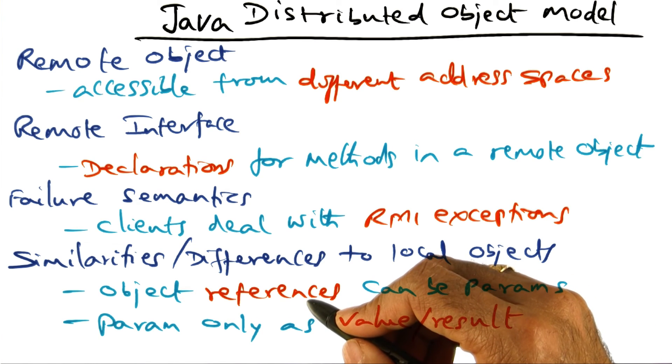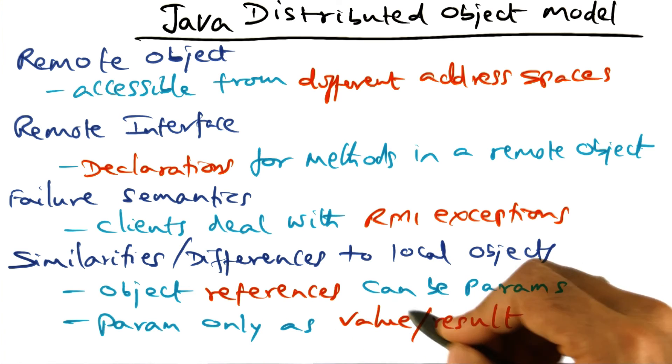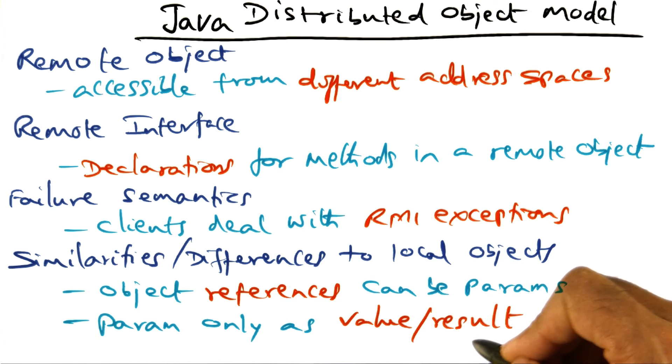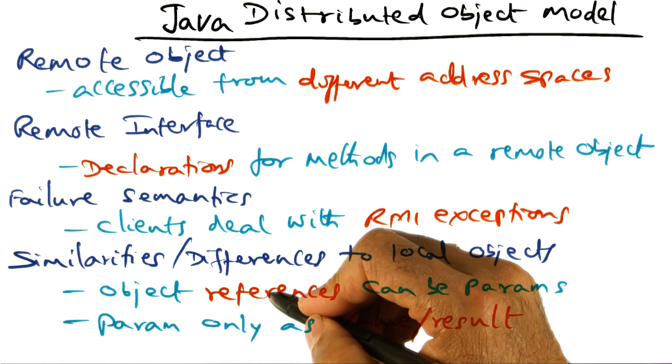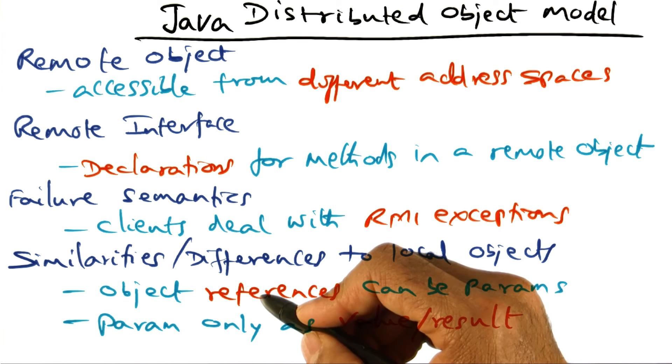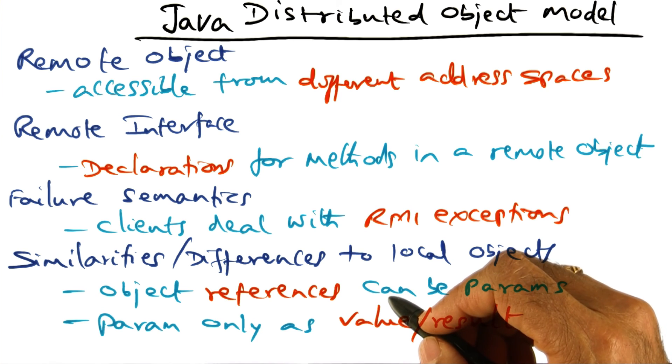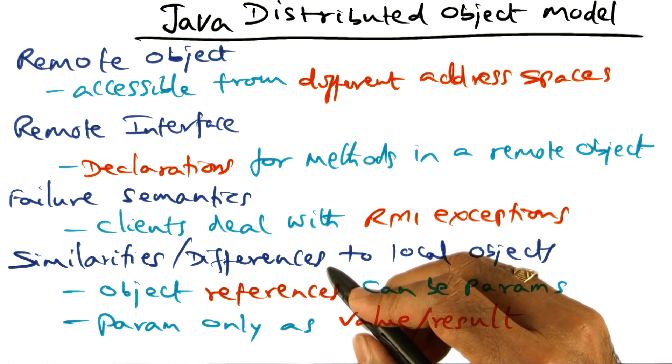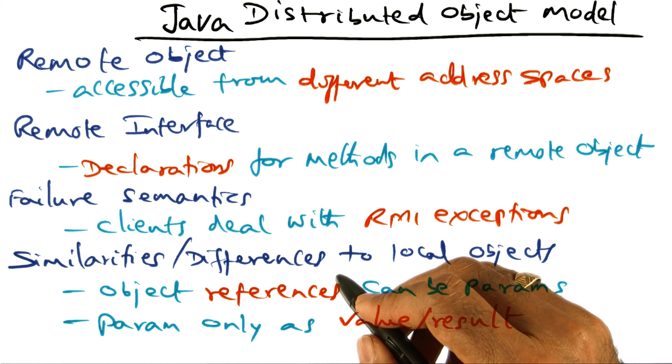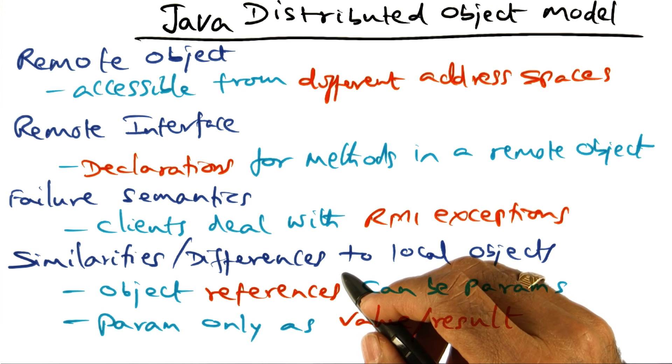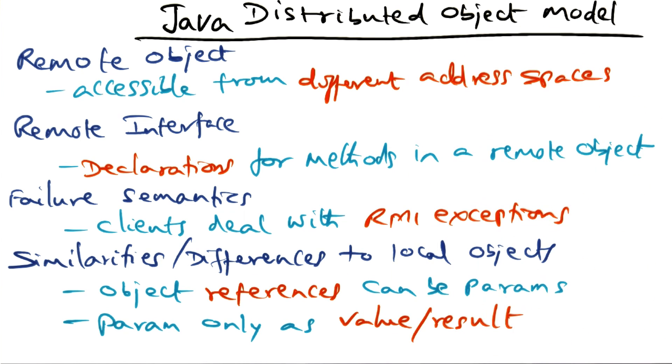So there's both similarities in the sense that you can pass object reference as a parameter, but the difference is the reference is passed in a value result mode as opposed to a pure reference. So in other words, once an object reference has been passed as a parameter to the server, if the client makes changes to that particular object whose reference has been given in the invoked method, those changes, the server will not see it, because that is local to the client. That's fundamentally different between the local object model of Java and the distributed object model of Java.